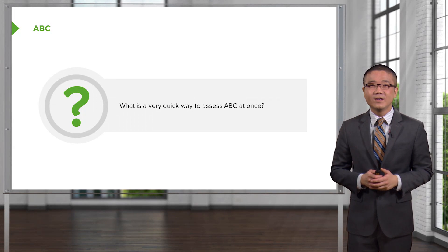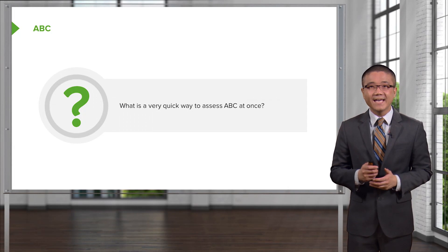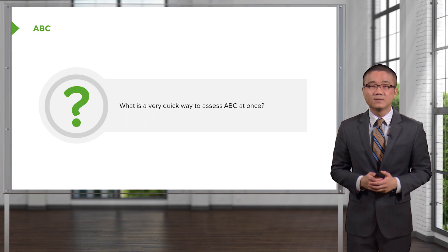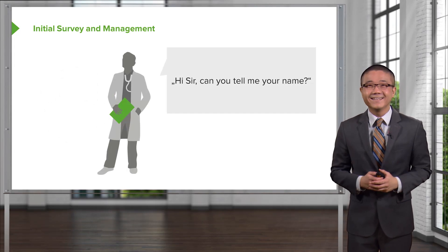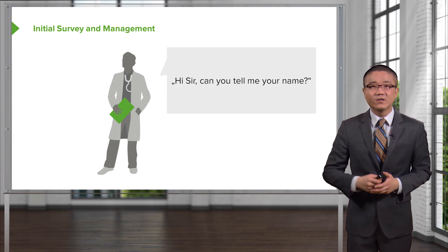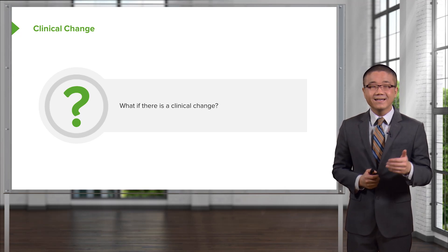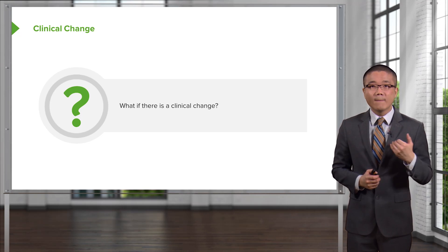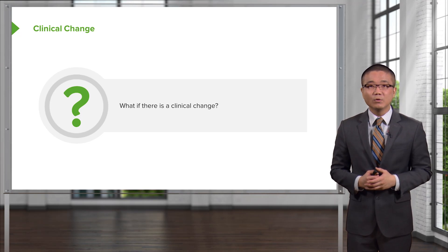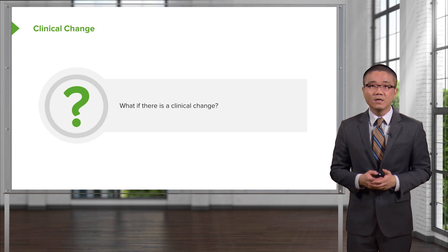What is a very quick way to assess A, B, and C all at once? It's quite easy — all you have to say is, 'Hi sir, can you tell me your name?' If the patient is able to tell you their name, it suggests: number one, their mental status is intact; A, their airway conduit is intact; B, air has to be moving through the conduit and past the vocal cords for them to answer; and C, they have enough perfusion to the brain to be able to answer your question.